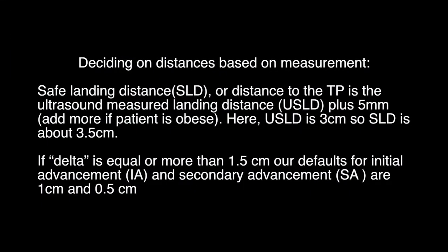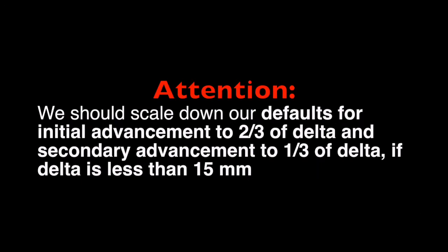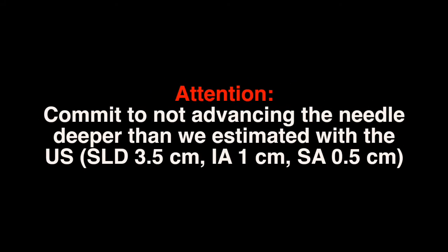The safe landing distance, or distance to TP, is the ultrasound-measured landing distance plus 5 millimeters — add more if the patient is obese. Here, USLD is 3 centimeters, so SLD is about 3.5 centimeters. If delta is equal to or more than 1.5 centimeters, the defaults for initial advancement and secondary advancement are 1 centimeter and 0.5 centimeters. If delta is less than 15 millimeters, scale down initial advancement to two-thirds of delta and secondary advancement to one-third of delta. Commit to not advancing the needle deeper than estimated with the ultrasound.